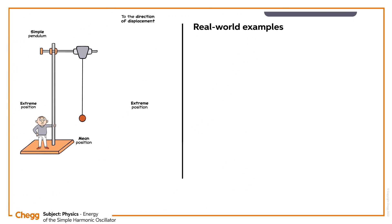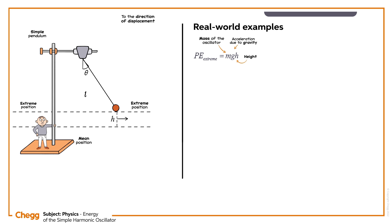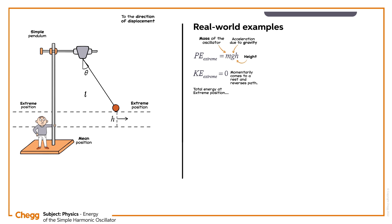Let us take the example of a simple pendulum, as shown on your screen. Energy at the extreme positions: at the extreme position, the oscillator covers a vertical height of h, so its potential energy is PE_extreme = mgh, where m is the mass of the oscillator and g is the acceleration due to gravity. At the extreme position, the oscillator momentarily comes to rest and reverses its path, so its speed and kinetic energy at this position would be zero — KE_extreme = 0. Therefore, total energy at the extreme position is TE_extreme = mgh.